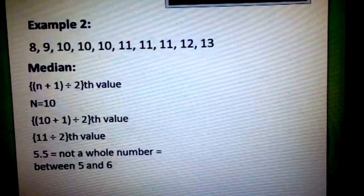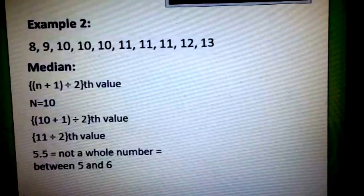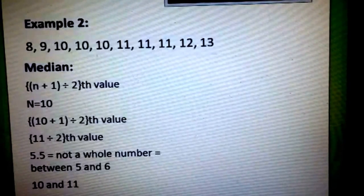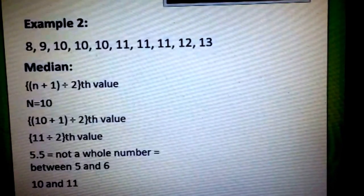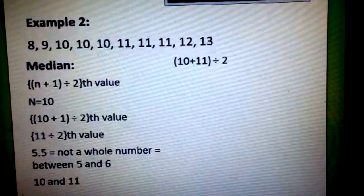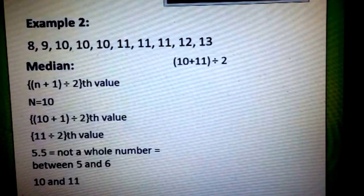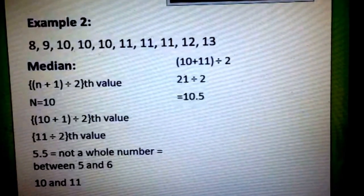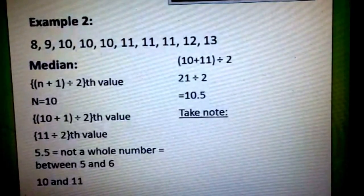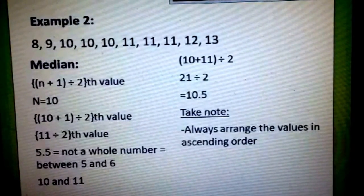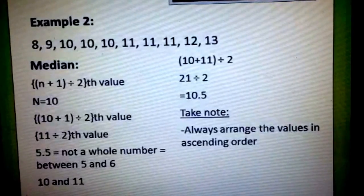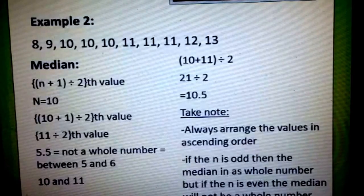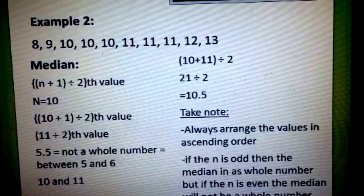Since this example is already arranged in ascending order, the 5th and the 6th value would be 10 and 11. To get the median, all we need to do is get the average of 10 and 11. We add 10 and 11 divided by 2: 21 divided by 2, we get 10.5 as our median. We need to always arrange the values in ascending order. One fact is that if n is odd, then the median is a whole number, but if n is even, the median will not be a whole number.